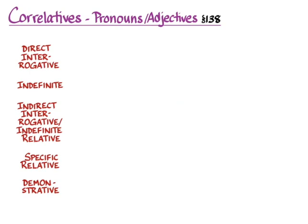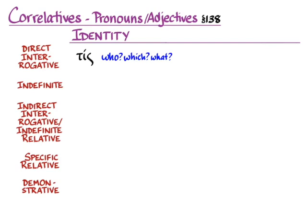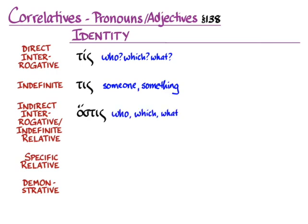Now let's move on to correlative pronouns or adjectives, covered largely in section 138. We'll start with words about identity. We ask 'who,' 'which,' or 'what' with the direct interrogative tis, ti — I'm only giving the masculine nominative singulars here to save space. The indefinite version, which you've also learned, is tis, ti (enclitic), meaning 'someone' or 'something.' The indirect interrogative, which you just learned in section 137, is hostis — 'she asks who is coming' uses hostis, hatis, or hauti.